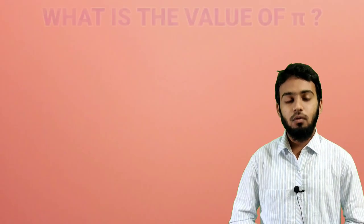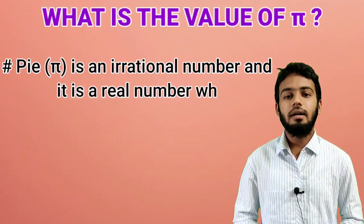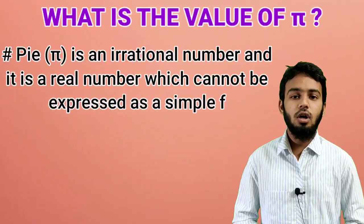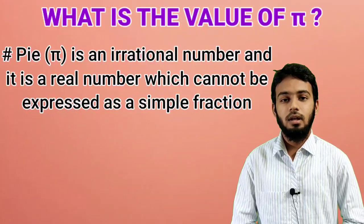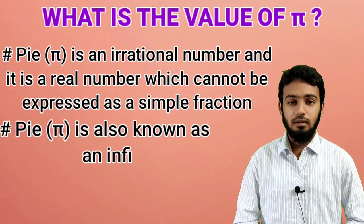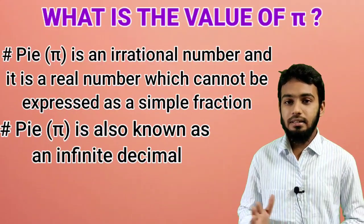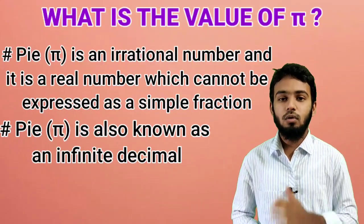Next, what is the value of Pi? Pi is an irrational number and a real number which cannot be expressed as a simple fraction. Pi is also known as an infinite decimal because its digits go on forever and ever.